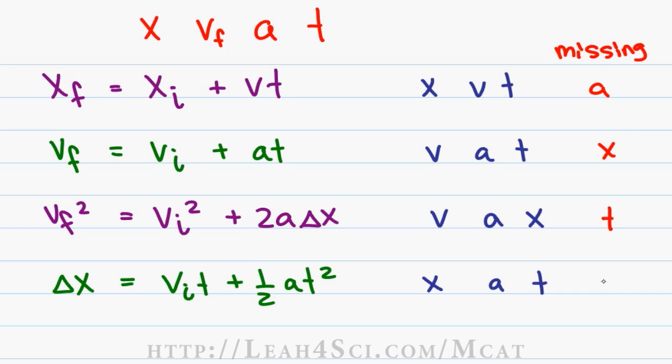In referring to these equations, we can say it has the 3 given or we can say it is missing. So for example, the first equation is the acceleration independent equation, the second one is displacement independent and so on.